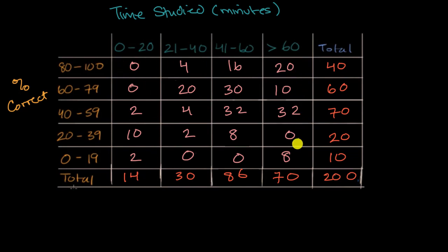So what you see right over here, this is a two-way table, and you could also view this as a joint distribution along these two dimensions. So one way to read this is that 20 out of the 200 total students got between 60 and 79 percent on the test and studied between 21 and 40 minutes.